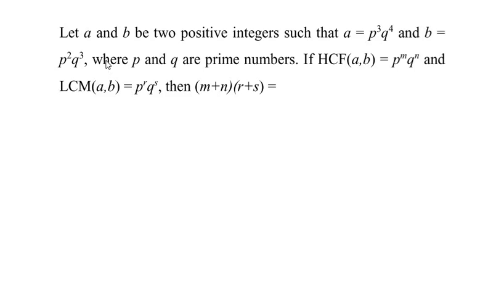Hello and welcome to my channel. In this video, we are going to solve an example on real numbers. Let a and b be two positive integers such that a is equal to p to the power of 3 times q to the power of 4, and b is given as p to the power of 2 times q to the power of 3, where p and q are prime numbers.